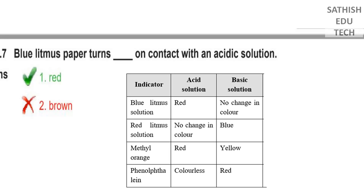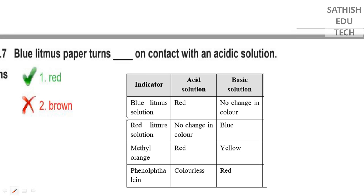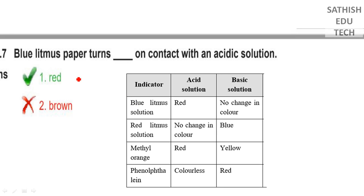Guys, we have to check the polarity. Here we go. That's the blue litmus. With the acid solution, we have red color. When you check the blue litmus, the color can be observed in each case.